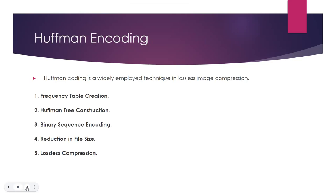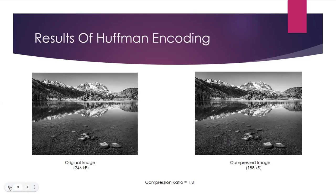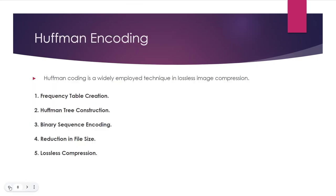My name is Mohil Gupta and I am going to discuss Huffman encoding for image compression. Huffman coding is a widely employed technique in lossless image compression. It is based on variable-length coding where different pixel values are assigned codes of varying lengths — shorter codes for more frequently occurring pixel values and longer codes for less frequent ones. The compression process starts with the creation of a frequency table that records how often each pixel value appears in the image. This frequency table serves as the basis for assigning Huffman codes.